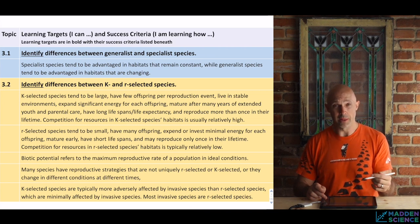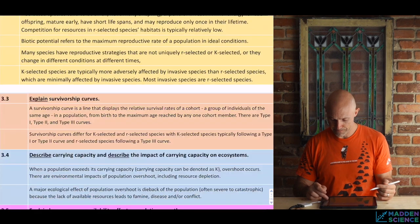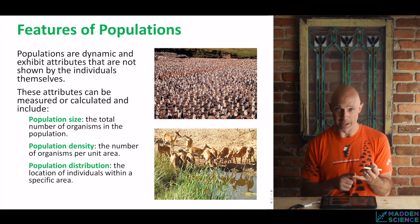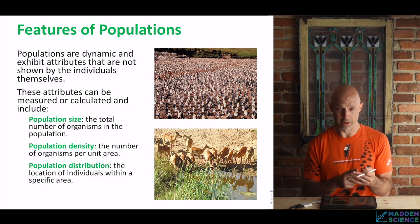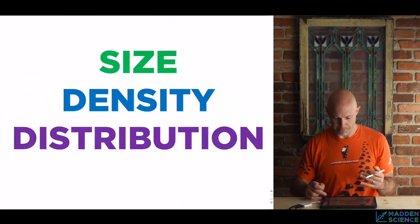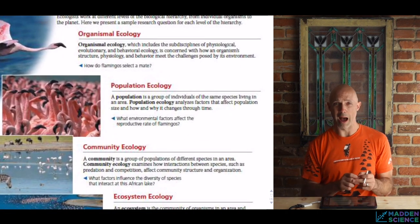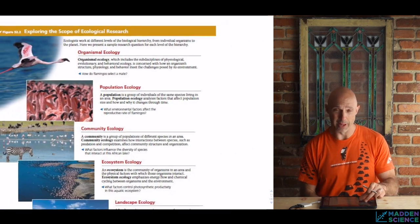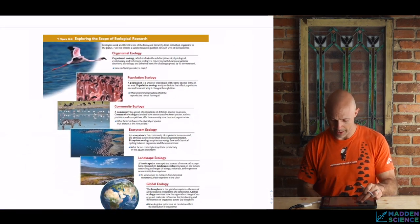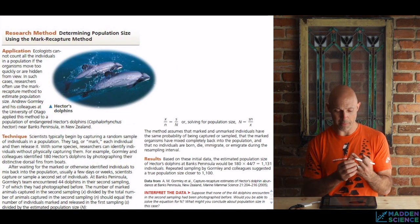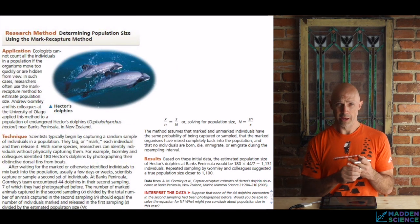Let's start with the general features of a population. Most basically: how big is it — how many individuals are there? How dense is a population, and where are they located? So: size, density, and distribution. We're all about population ecology here, as opposed to — or really overlapping with — other areas of ecology in terms of counting. Size: how many are there?